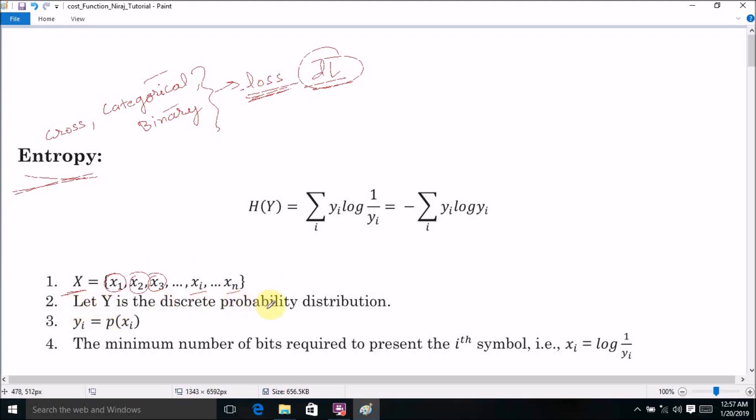And let Y is the discrete probability distribution which represents the probability of occurrences of those symbols. We can say it like Y is equal to Y1, Y2, Y3, Yi, Yn. Here, Yi is the probability of occurrences of symbol Xi.